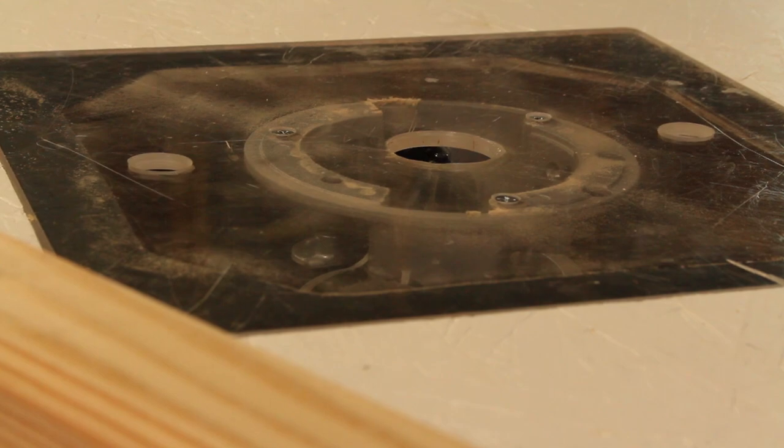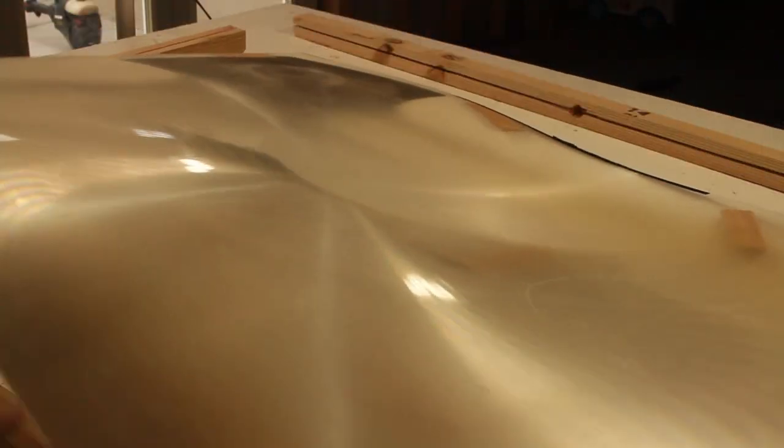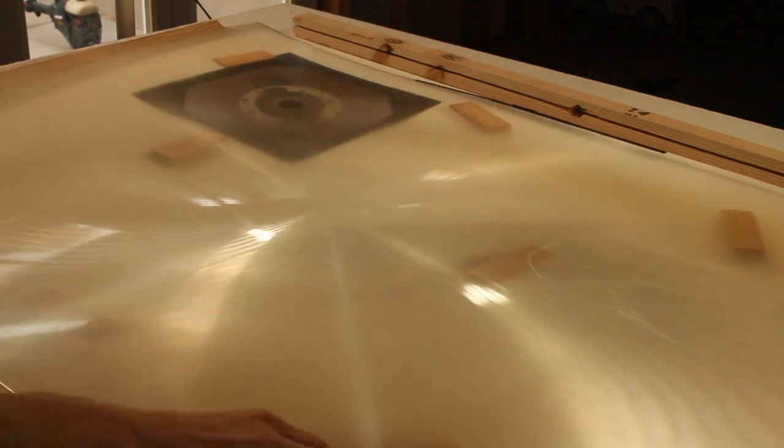Those are done, so now I can retract my router bit and lay these support blocks down. The lens goes over top, and these blocks are helping prevent the lens from warping.